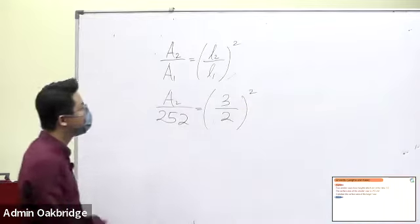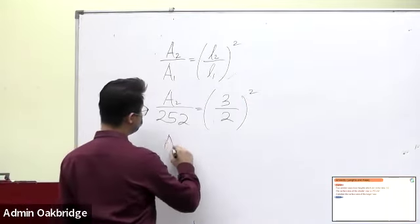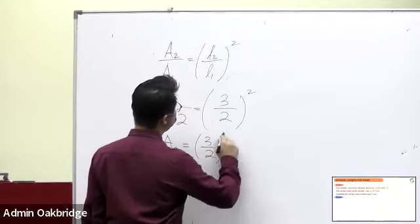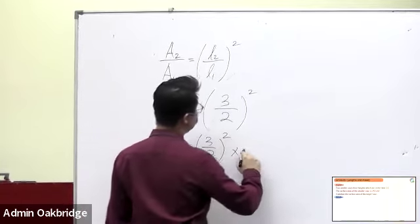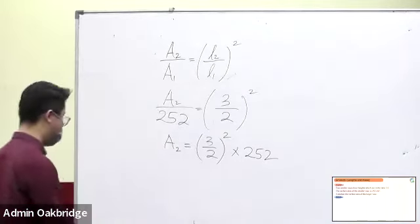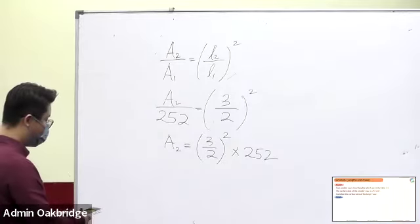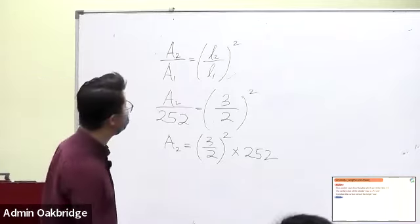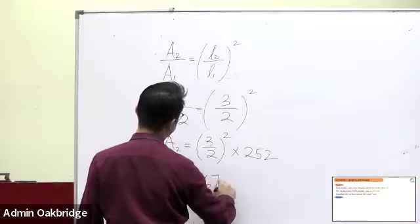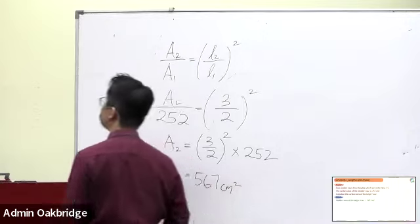So now take the square. Now you can find A2: 3 over 2 squared, times 252, gives you the result in cm squared.